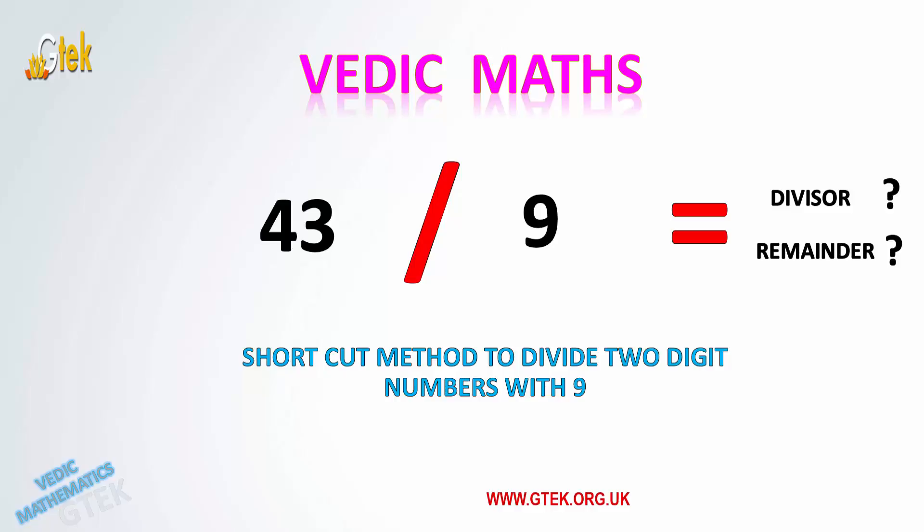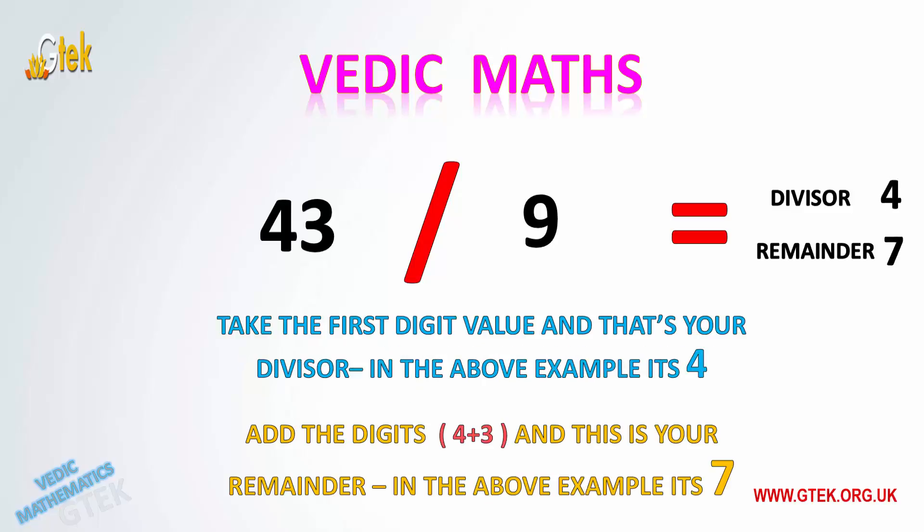Take the first digit of 43, which is 4 — that will be our quotient. For the remainder, we add the digits 4 and 3, so 4 plus 3 equals 7. That is our remainder when dividing 43 by 9.